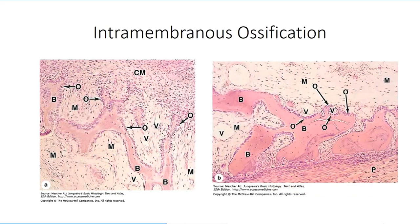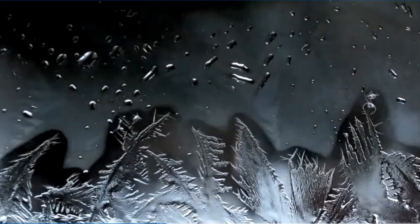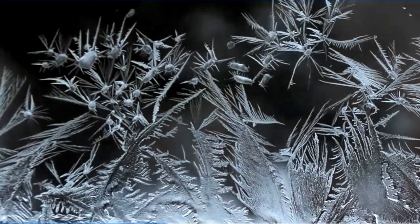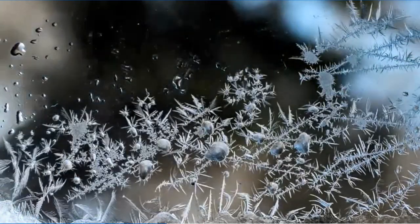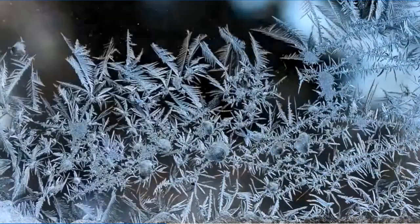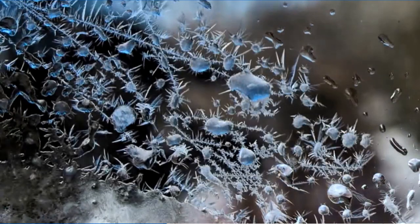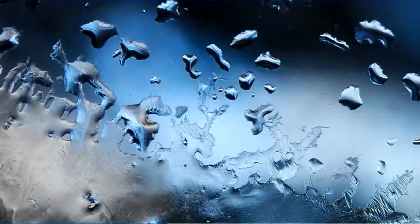The process continues after birth, as the bone plates continue to grow and develop into the membranous mesenchymal connective tissue that makes up the fontanelles, or soft spots of the skull. The process of nodular growth and expansion bears a striking resemblance to the growth of frost on a windowpane, with different points freezing, expanding, and fusing until a solid and uniform sheet of frost has formed over the entire surface of the glass.